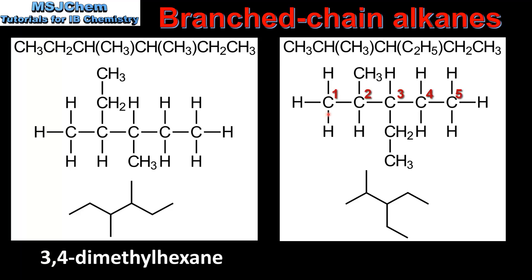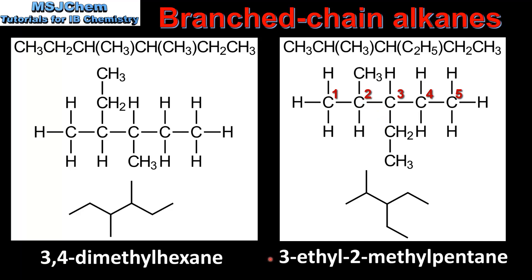In our last example the longest carbon chain is 5 carbon atoms. There are two branches: we have a methyl group on carbon number 2 and an ethyl group on carbon number 3. The name of this molecule is 3-ethyl-2-methylpentane. Note that because E comes before M in the alphabet, ethyl comes first and methyl comes second, giving 3-ethyl-2-methylpentane.